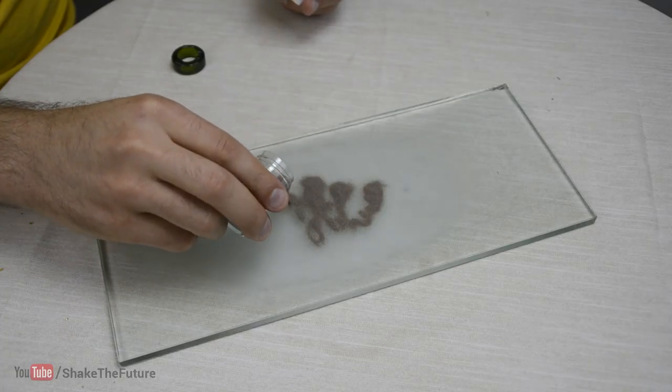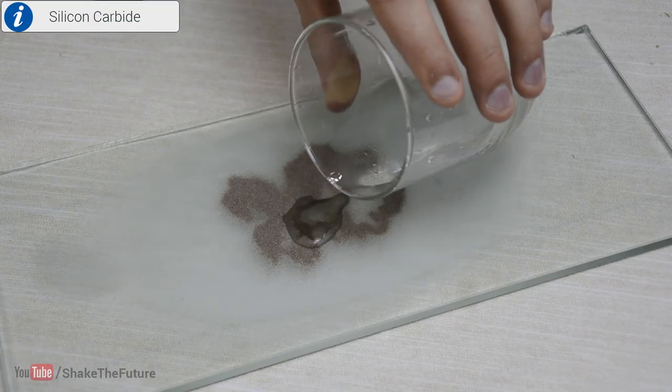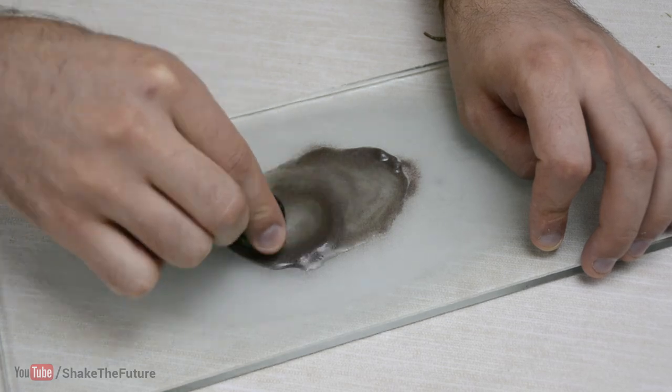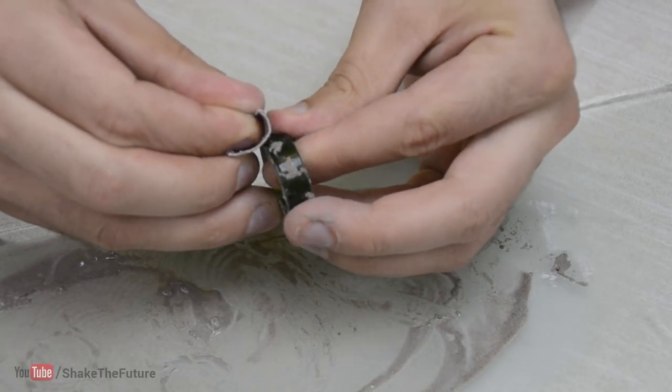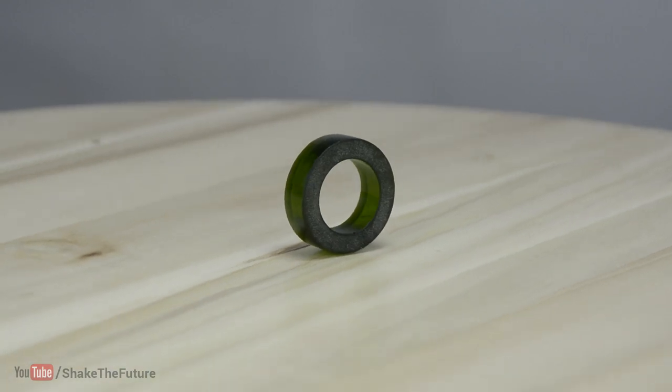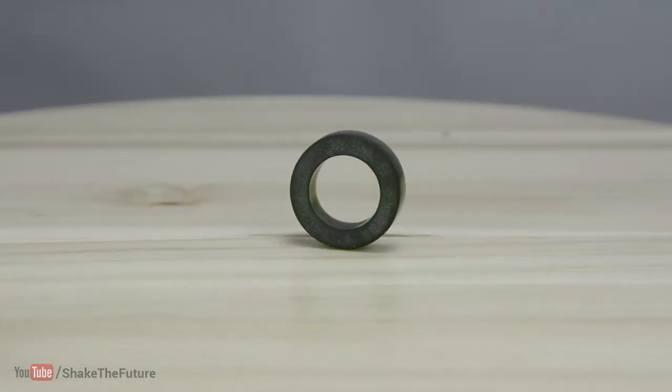To sand the glass, I used silicon carbide. You can get it on eBay. I also used sandpaper to sand the edges. Well, that's it! Our glass ring is ready!